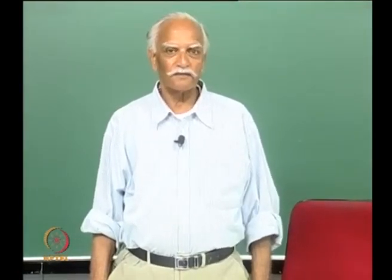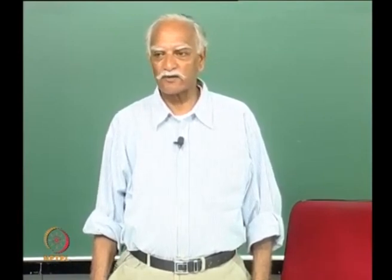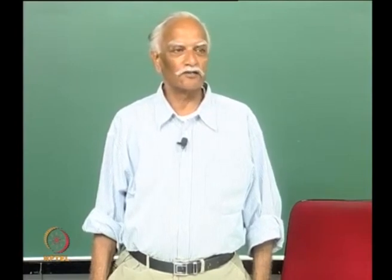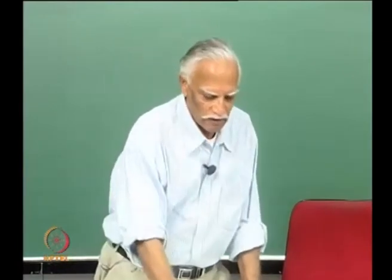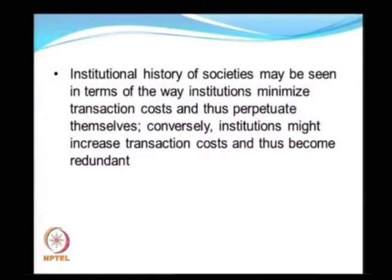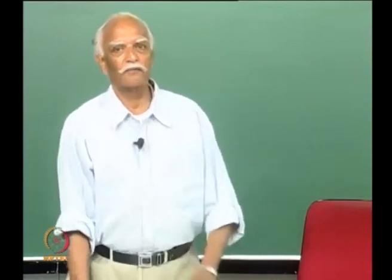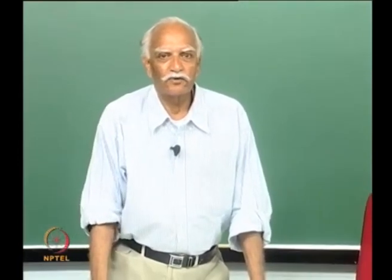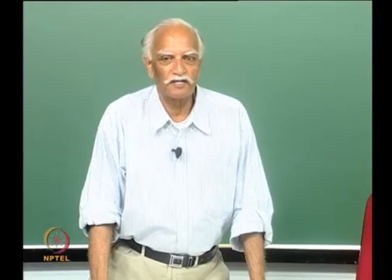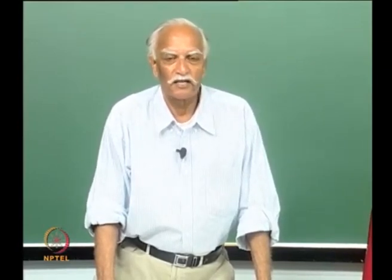Douglas North made a very interesting study of how the existence of transaction costs gave rise to the rise and fall of institutions in society historically. Every institution has a particular set of transaction costs associated with it. There are certain institutions which minimize the transaction costs of economic processes in society, and there are others which do not. According to North, the institutional history of a society might be perceived in terms of whether institutions minimize or increase transaction costs at any particular point in time.